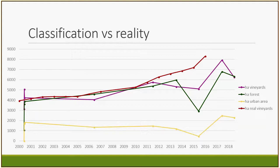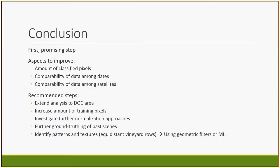Looking at the evolution through the years, in purple and red we can compare the estimated vineyard area in hectares with the official vineyard area in red. It starts with some confusion in 2000, then the increase of vineyard land cover follows the real evolution, and then we have a drop of all classes in 2015. As a conclusion, this is a first promising step which has still some aspects to improve: the amount of classified pixels due to small training sites, and the comparability of data among dates and satellites. I recommend extending the study to the DOC area, checking validity of trained signatures over a wider area, increasing training sites, investigating further normalization approaches, finding additional ground truth sources for the past, and identifying patterns like vineyard rows using geometric filters or machine learning.